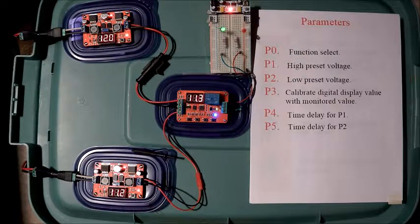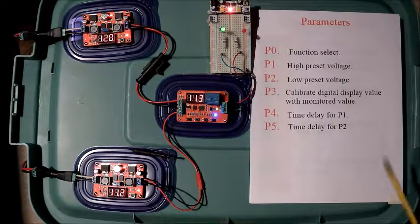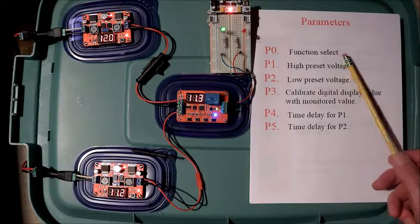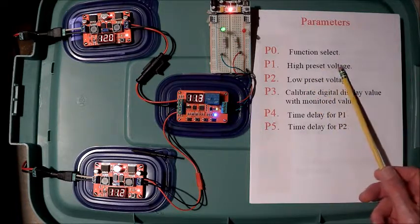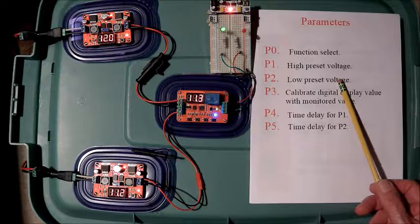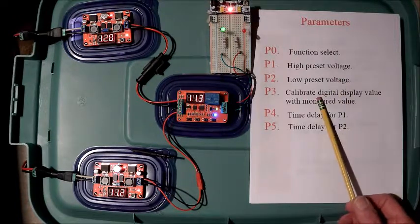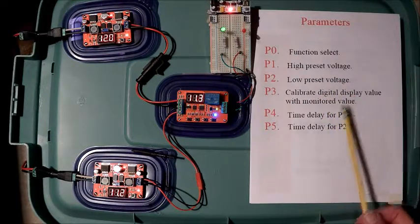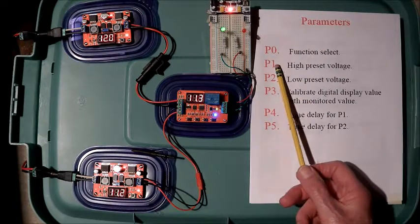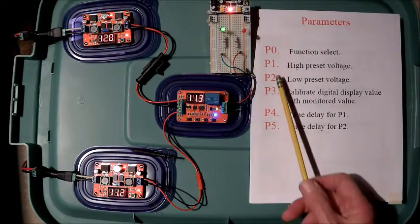There are six parameters associated with the DVB-01. Function set, preset high voltage, preset low voltage, calibrate the display, time delay for P1, time delay for P2.